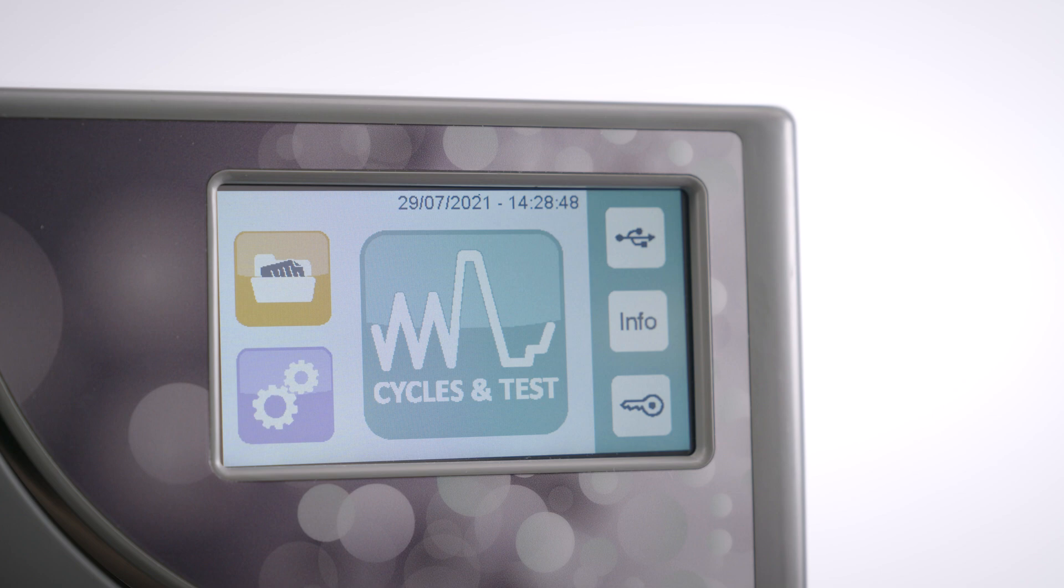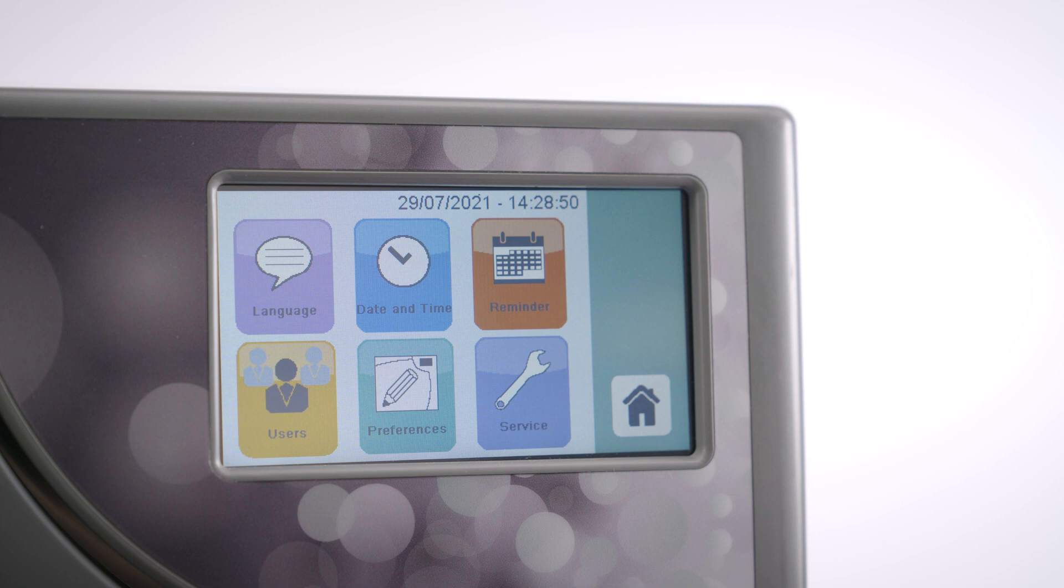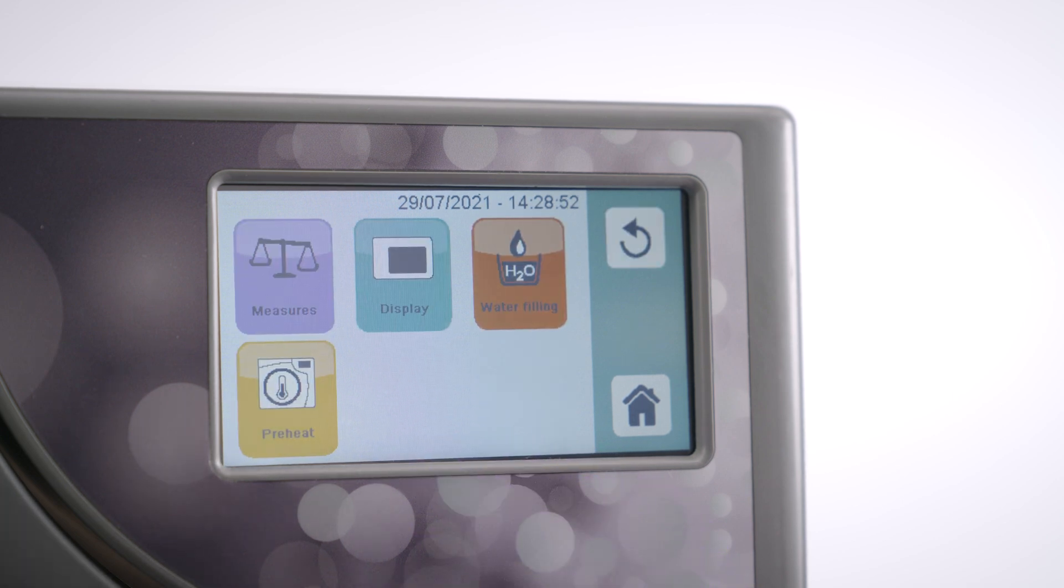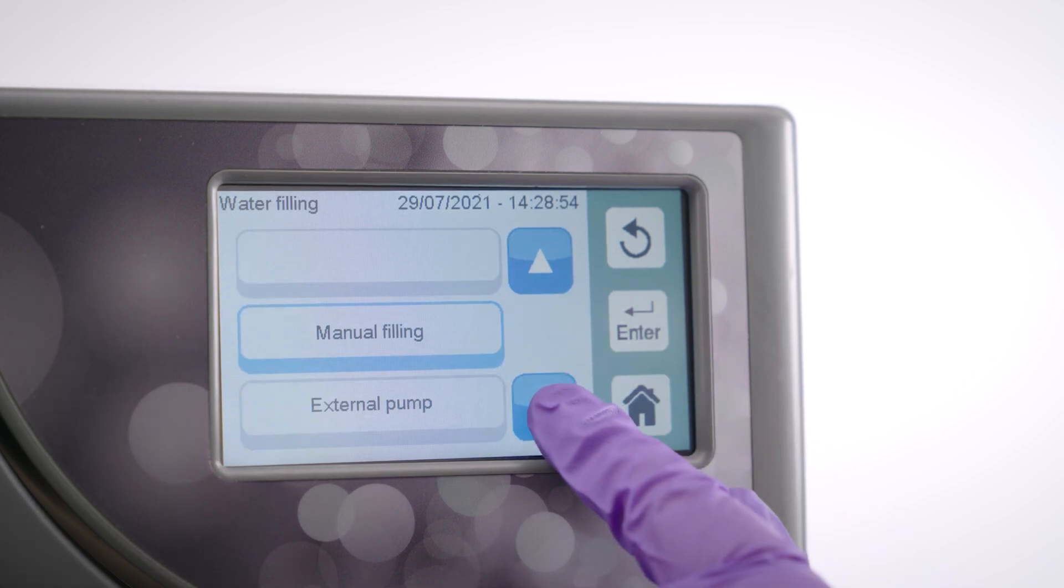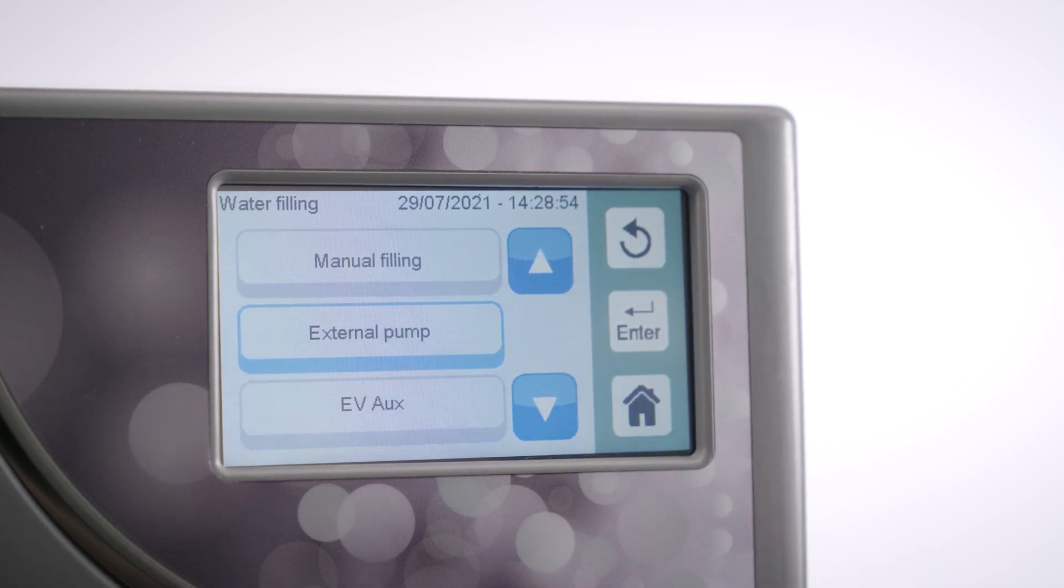Follow these simple steps to select the correct water filling setting. Select the settings icon, followed by preferences. Select the water filling icon, which will bring you to a list of manual and automatic filling options.